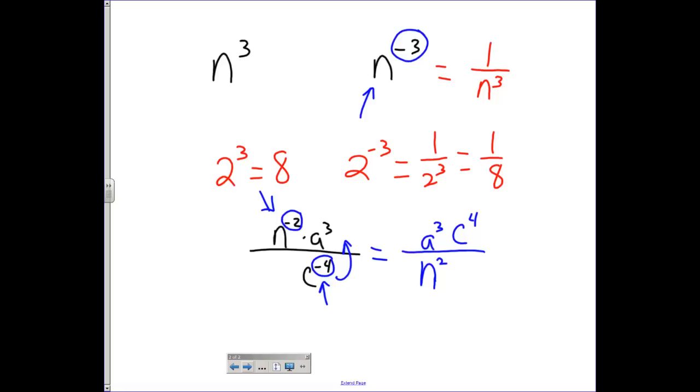So I end up having a to the third times c to the fourth all over n to the second. And it turns out that this expression is mathematically equivalent to this expression. The only difference is this one over here now does not contain negative exponents. So you have to know what the accepted way of showing your answer is, with or without negative exponents.